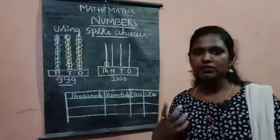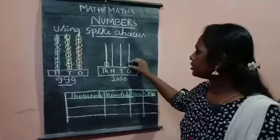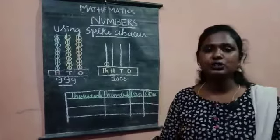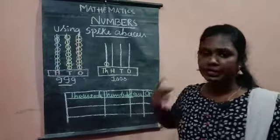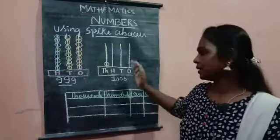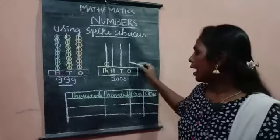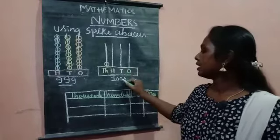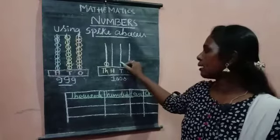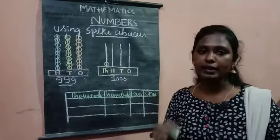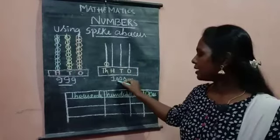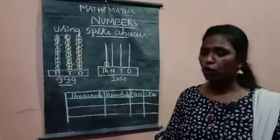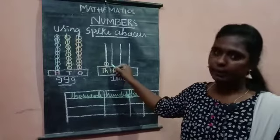So, whenever we are getting 0, we need, we don't want to represent beats or any other drawings in the particular place. So, I have not drawn any beats over here and even in the 10th place, we have 0. So, I have not mentioned any beats. In the 100th place also, I have 0. So, I have not mentioned any beats.